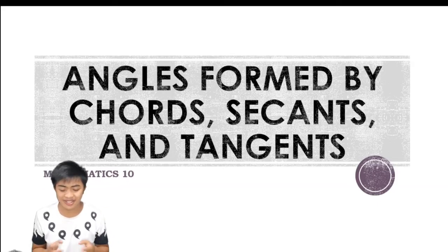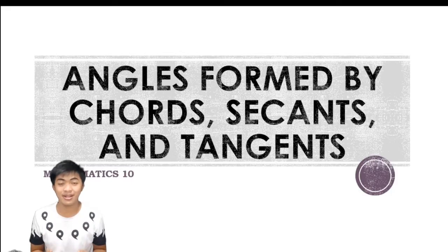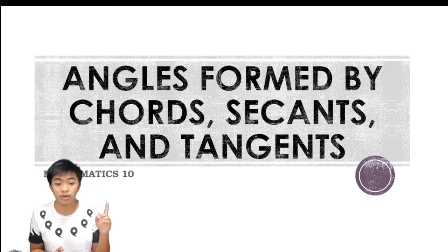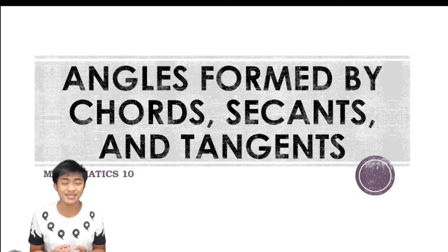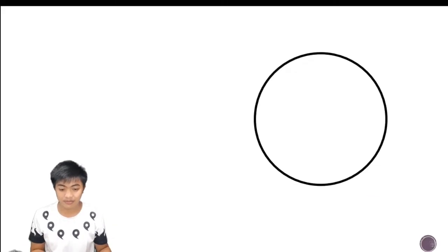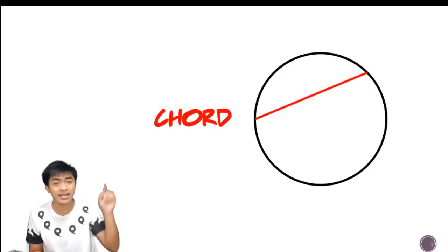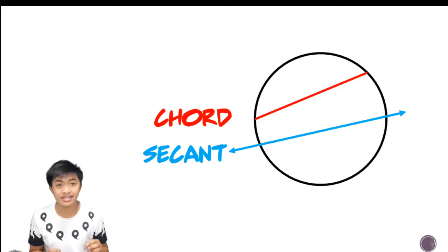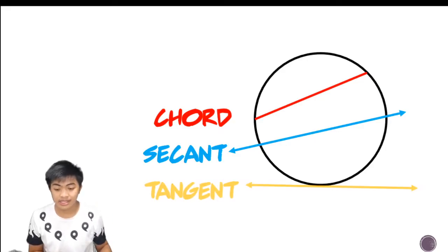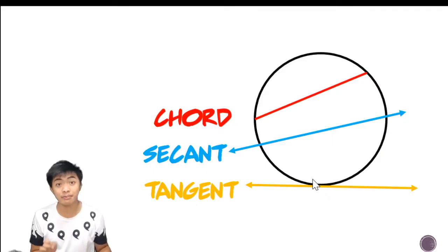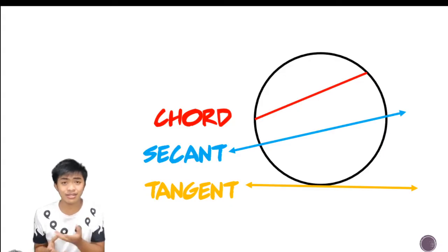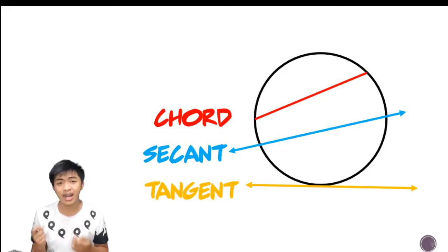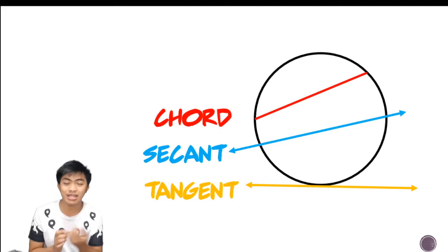Hello there again — long time, no see. There's just a lot of things happening right now but we continue learning. In this video we will be covering angles formed by chords, secants, and tangents. We know that a chord is a segment with endpoints on the circle, a secant is a line that touches the circle at exactly two points, and a tangent is a line that touches the circle at exactly one point. The point where the tangent touches the circle is called the point of tangency. When these lines intersect inside or outside a circle, angles are formed, and those angles have a relationship with their intercepted arcs.